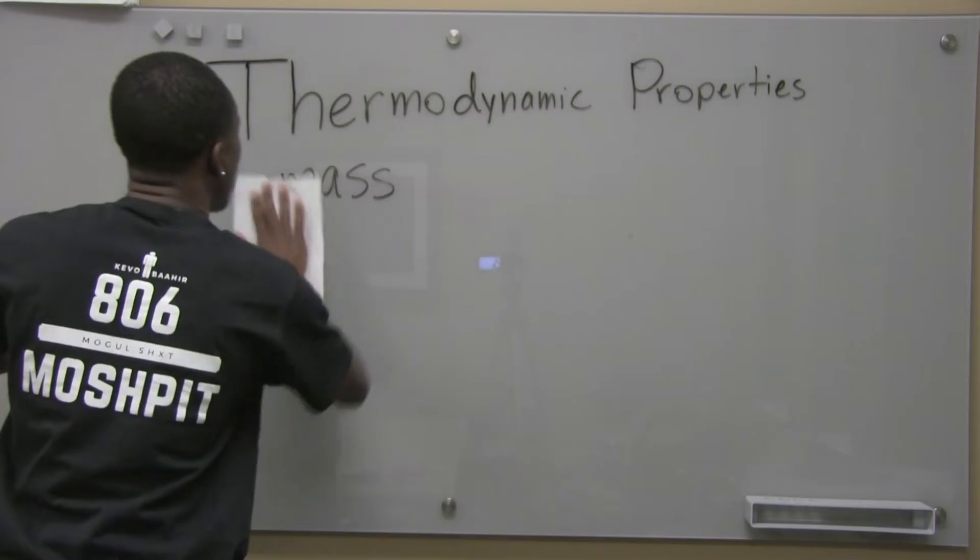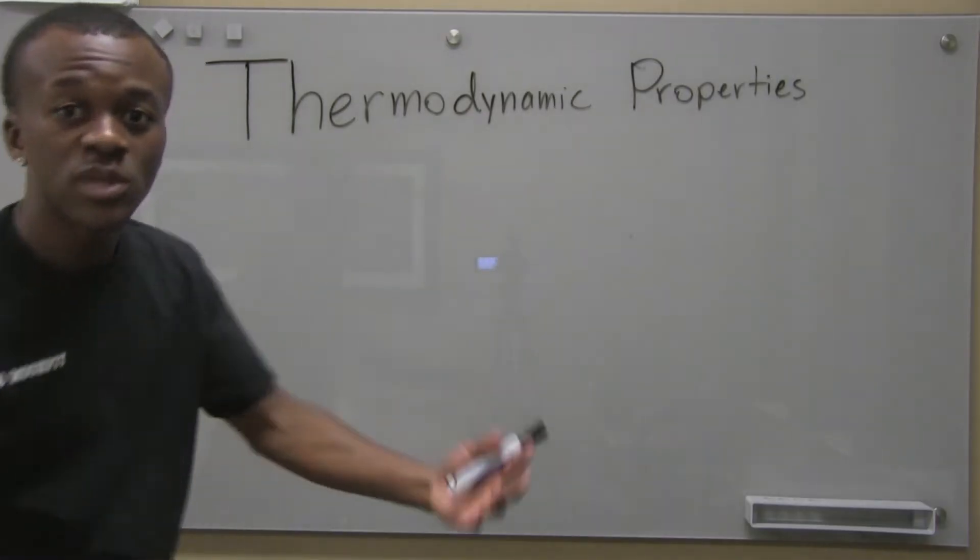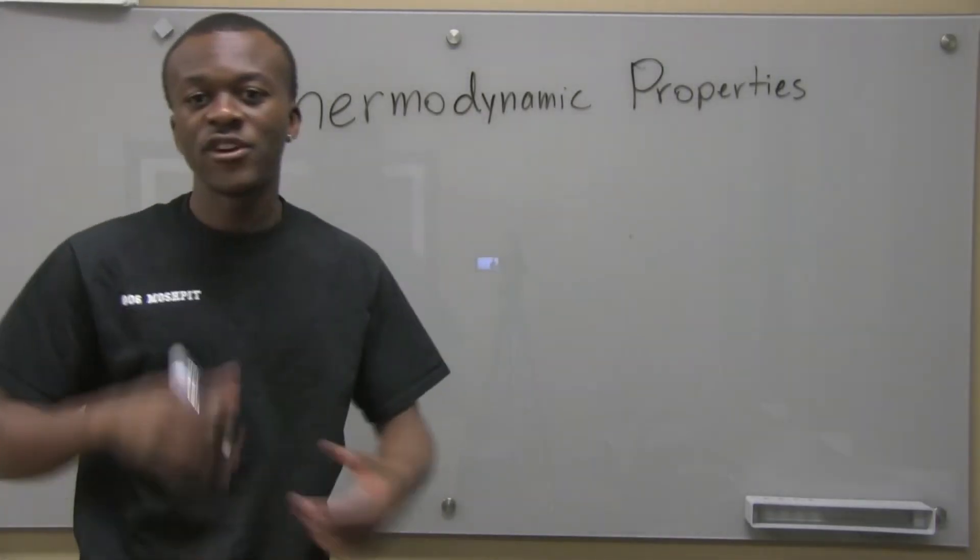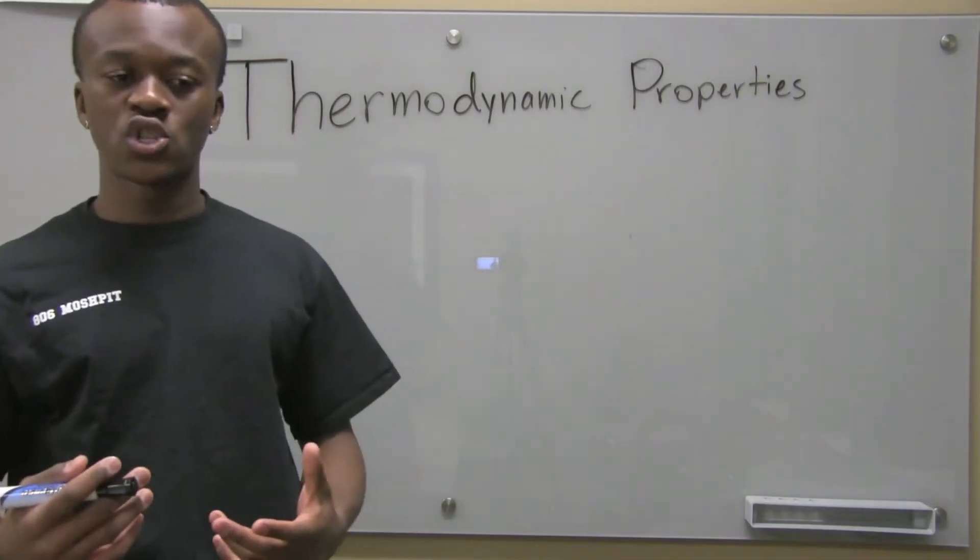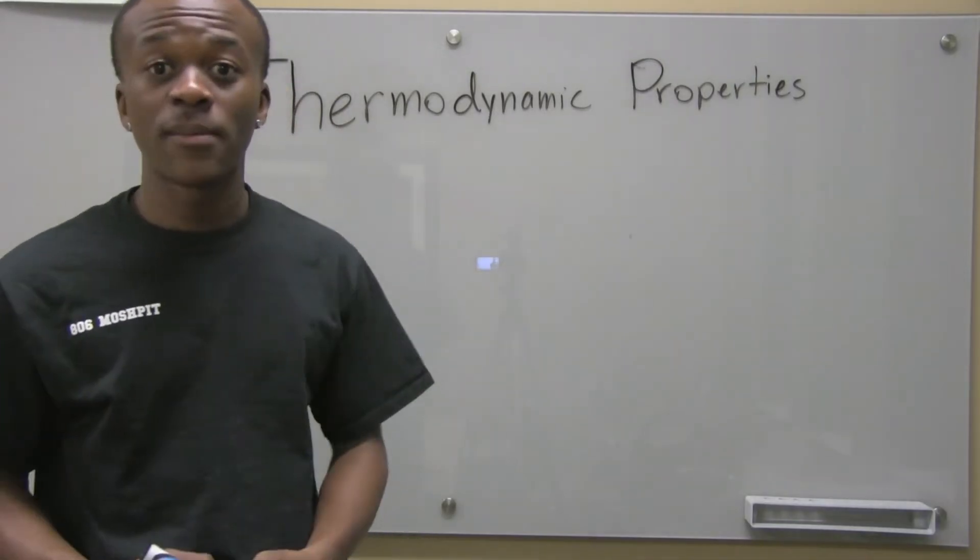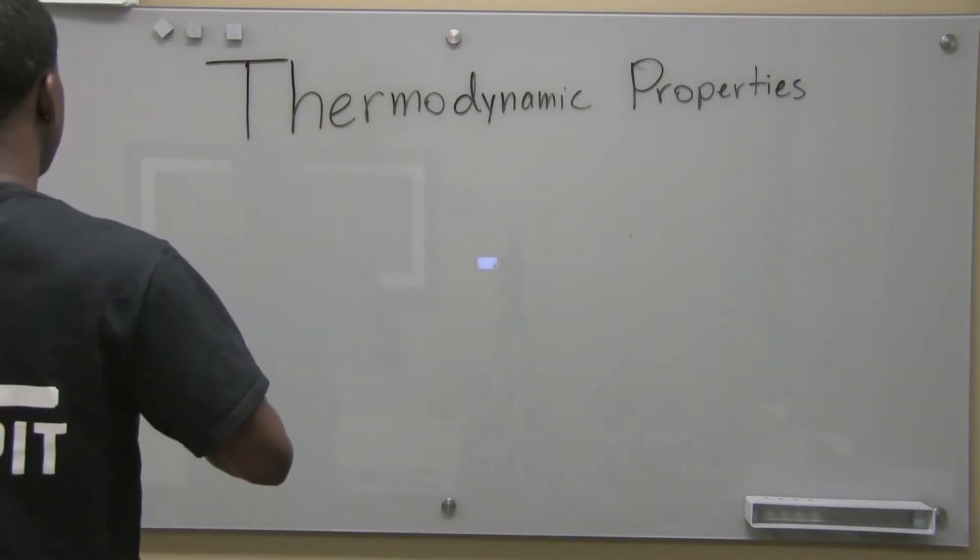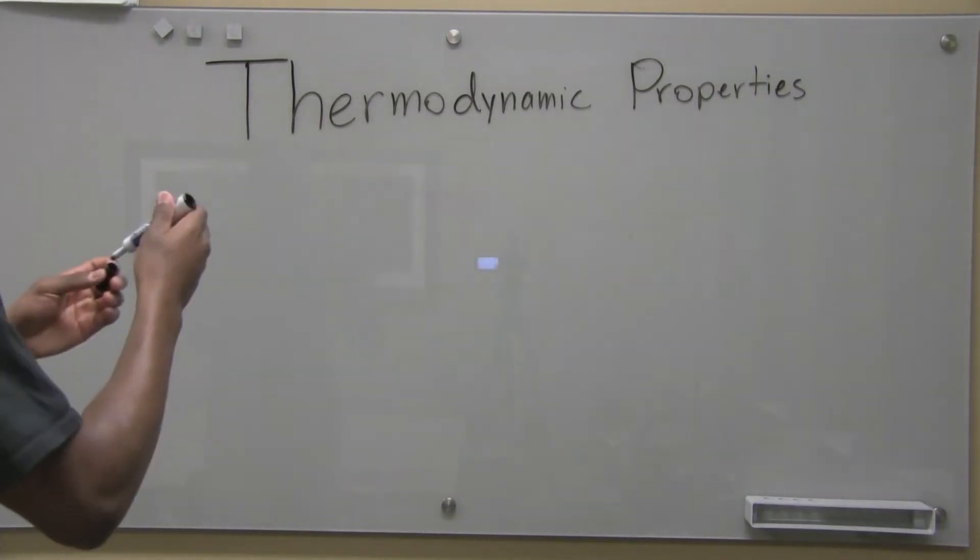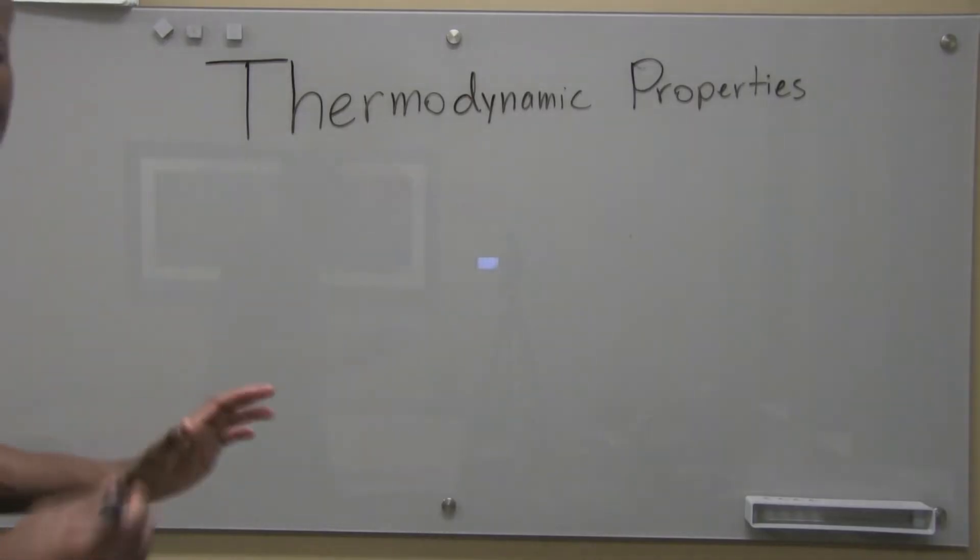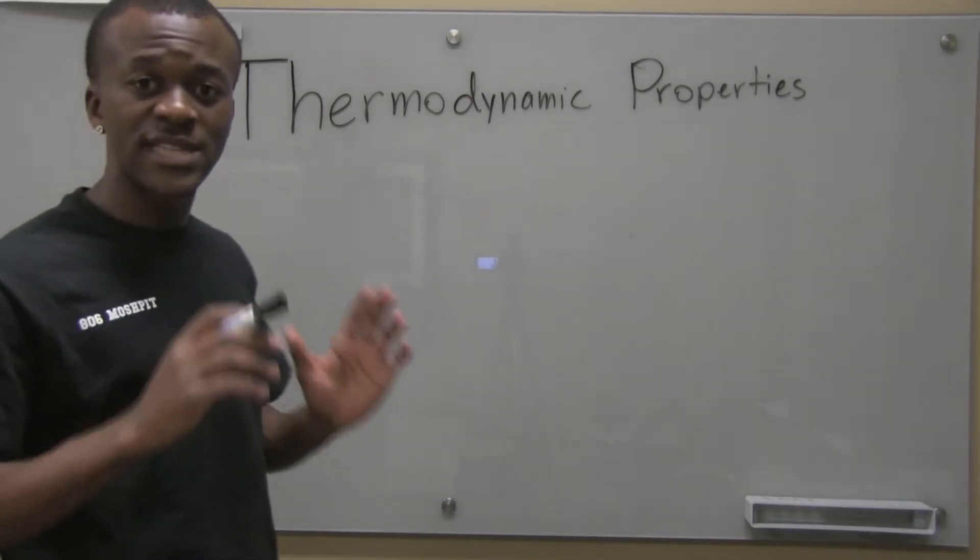Now, I'm sure you're wondering, what do we do with these properties? We can use these properties to help us figure out what's going on in the system. So you can also use these properties to help you find other properties. What else can we talk about? So basically, there's something called a state postulate.